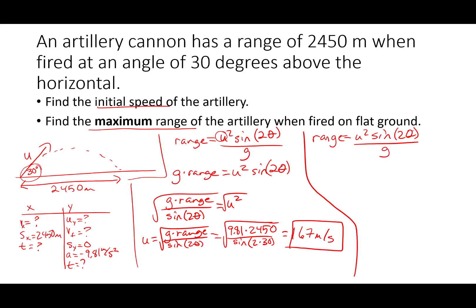And we know that the maximum range occurs when theta is equal to 45 degrees. So we just plug in our initial velocity and 45 degrees here. Range equals 167 meters per second squared times sine of 2 times 45, 2 times 45 degrees divided by 9.81. We get an answer. Plug it into a calculator. 2,830 meters. That's our maximum range.